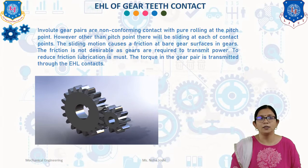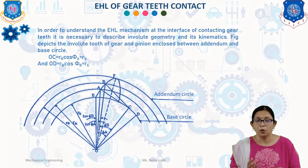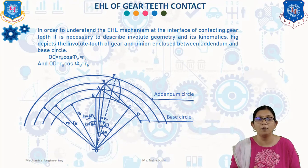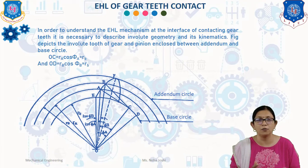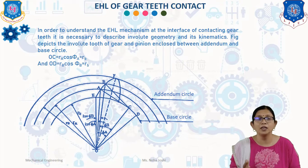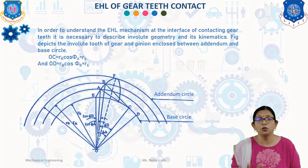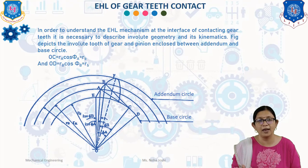In order to understand the EHL mechanism at the interface of contacting gears, it is necessary to describe the involute geometry and its kinematics. Here in the figure, the involute tooth of gear and pinion enclosed between the addendum and the base circle. The addendum circle is a circle touching the outermost point of the teeth. The base circle is a circle from which the involute portion of the tooth profile is generated. Two points A and B are considered on a spur gear with involute profile at radius R_A and R_B from the center of the base circle. The tangent from the base circle to the points of interest intersect the base circle at points C and D respectively from triangles AOC and BOD.